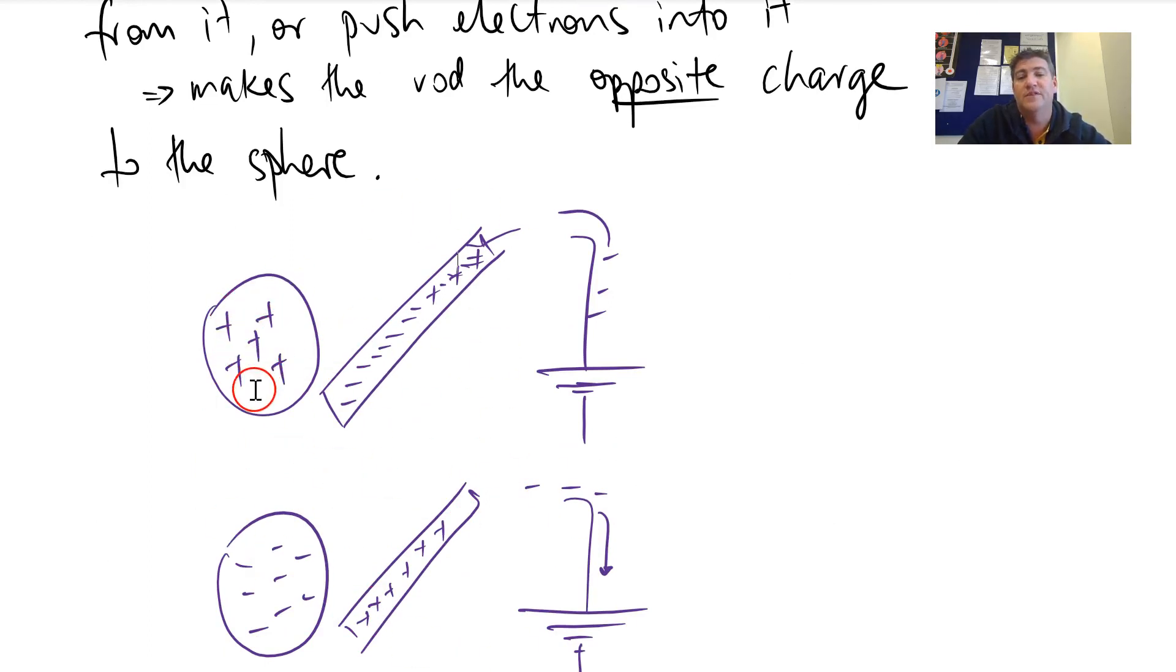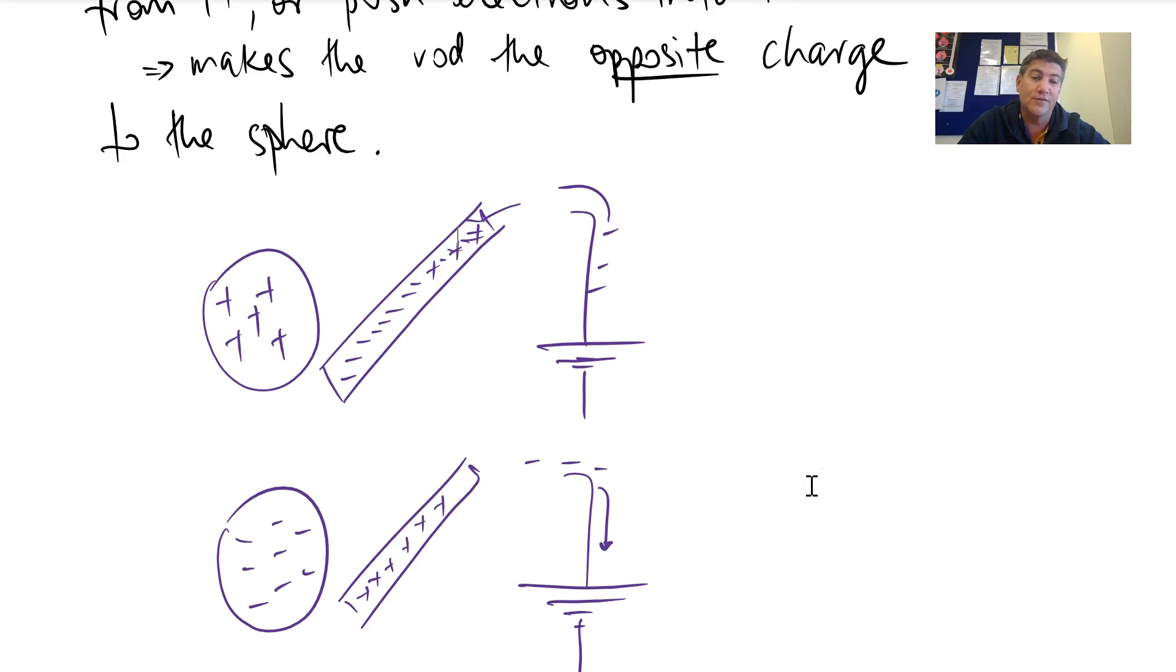So if you use the Van de Graaff, which is positive, we can charge a thing negative, even though we've got no negative charge. We're just kind of dragging it out of the Earth. Hopefully this makes a little bit more sense and you can refer back to this one as many times as you like.